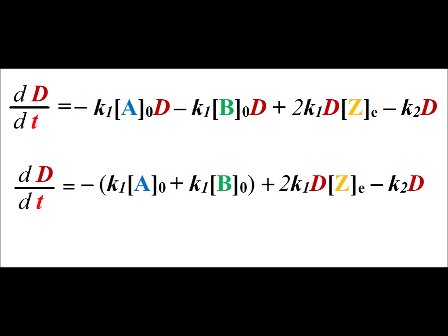In this step, all we are doing is factoring out a minus one from the first two terms, so that we can get minus k1 times the initial concentration of a plus k1 times the initial concentration of b.